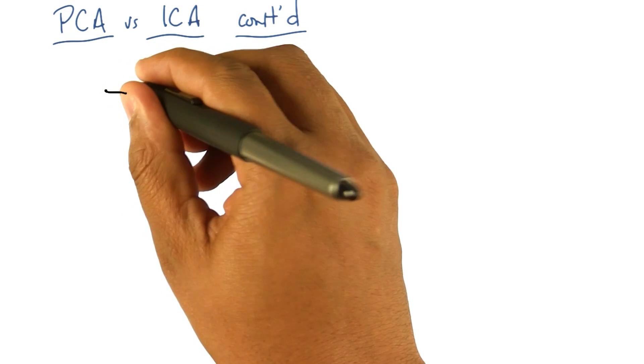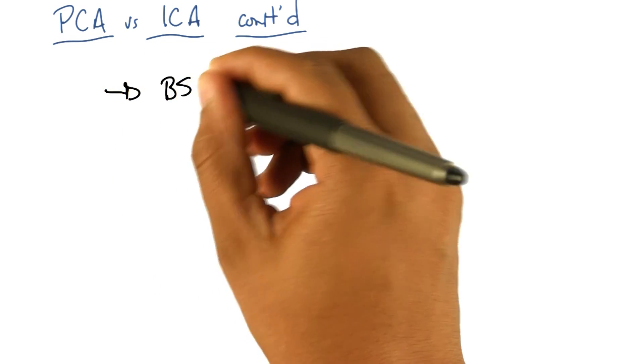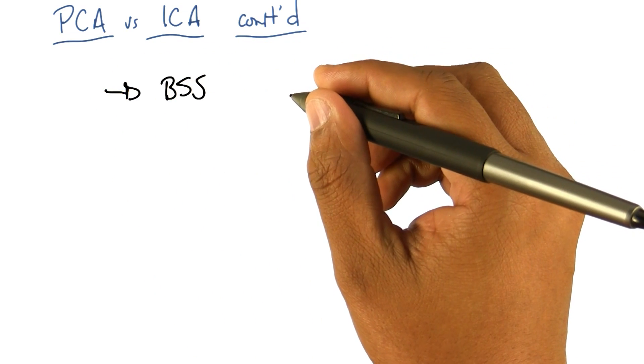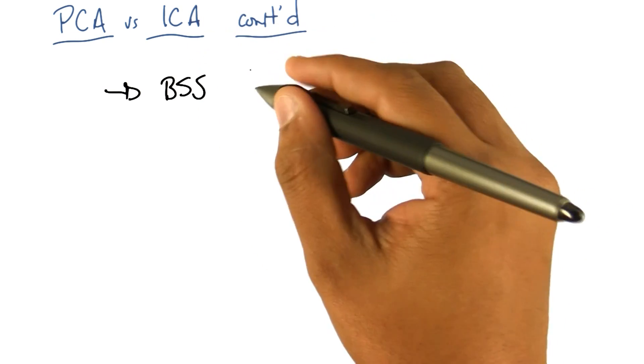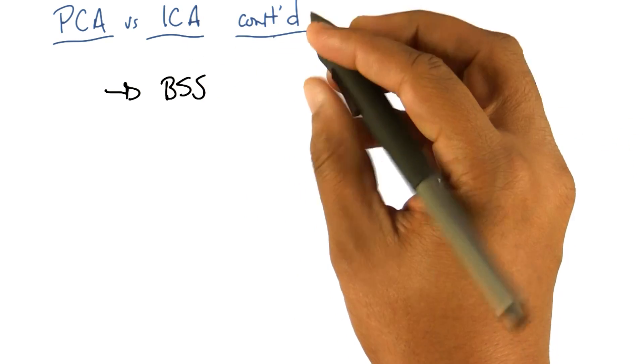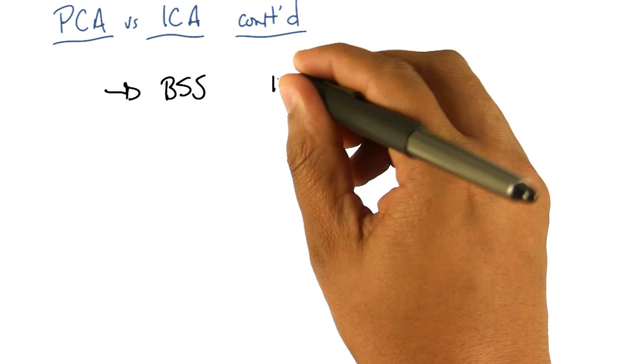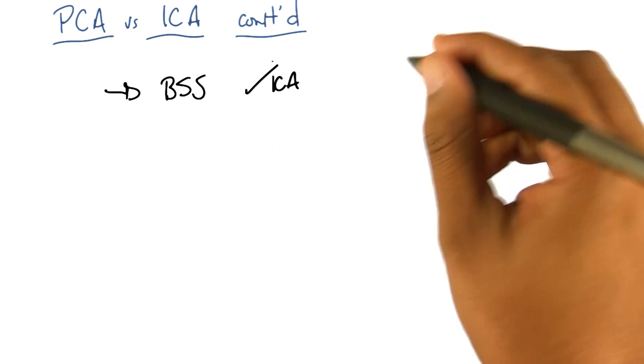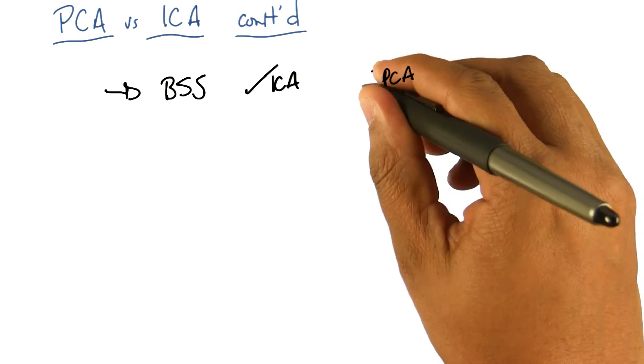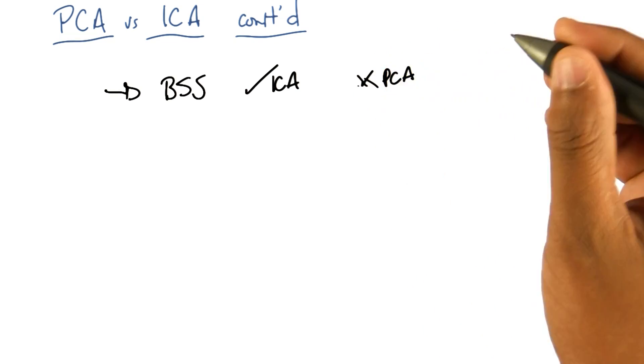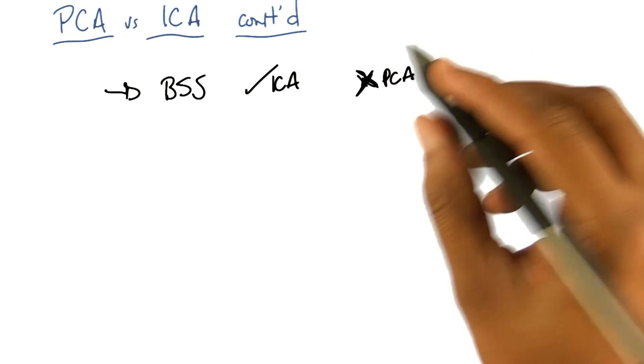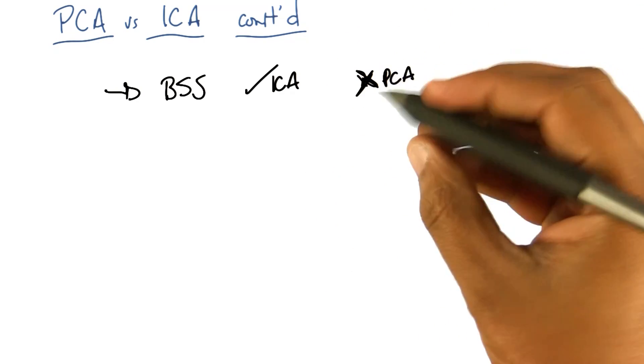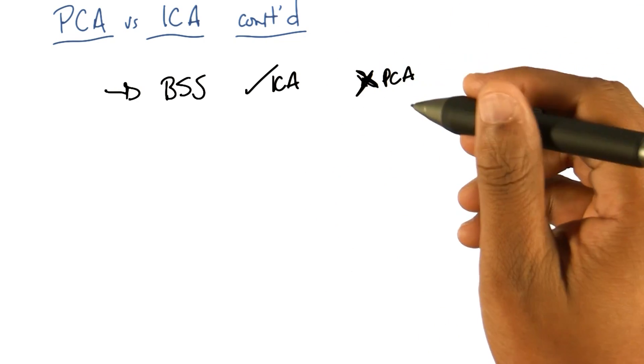The one we covered right away was the blind source separation problem. What we recall is that ICA in some sense was designed to solve the blind source separation problem, and in fact ICA does an excellent job at solving it. Meanwhile, PCA does a terrible job at solving the blind source separation problem, just because it's assuming these kind of Gaussian distributions.